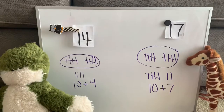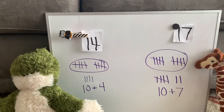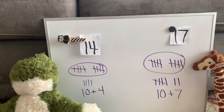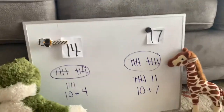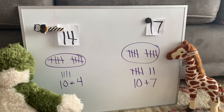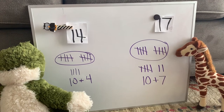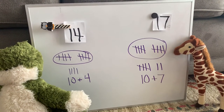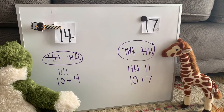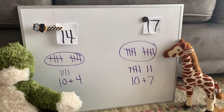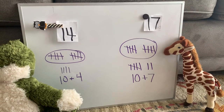Which number is less? Fourteen. Can you compare fourteen and seventeen? Fourteen is ten plus four, and fourteen is less than seventeen. And seventeen is ten plus seven. Can you use the word 'greater than' when comparing seventeen and fourteen? Seventeen is greater than fourteen because it's seven more than ten, and fourteen is only four more than ten. Thank you.